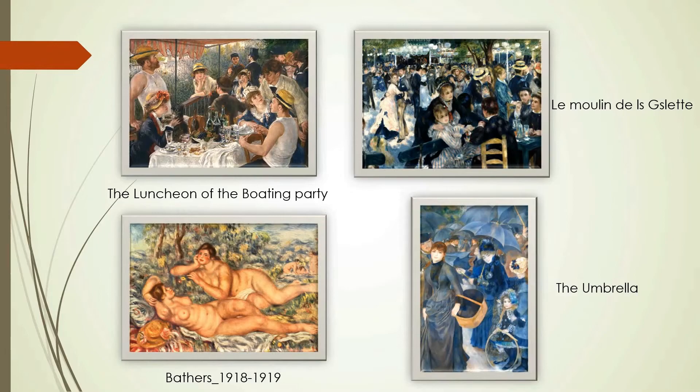In his later works, he departed from strict classicism to paint colorful, vibrant scenes and landscapes of the South of France, where he settled in 1907. Rheumatism confined him to a wheelchair by 1911, but he never ceased to paint, even though often with his brush attached to his hand. The filmmaker Jean Renoir was his son.